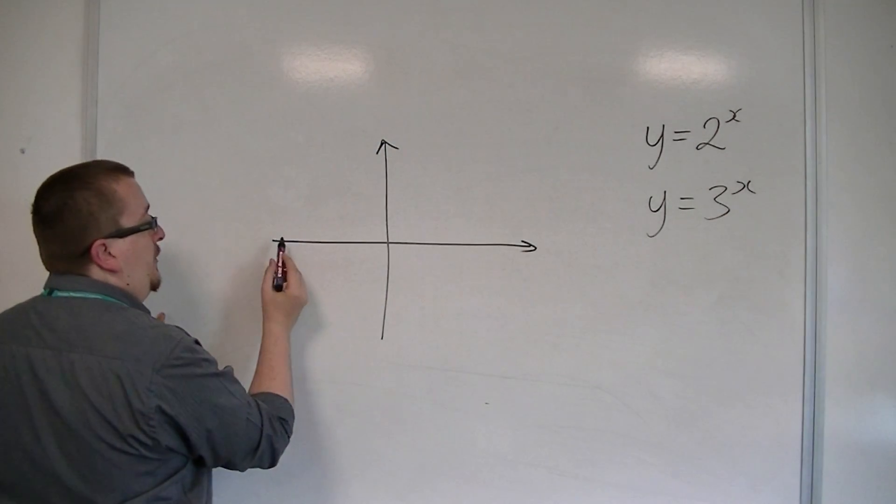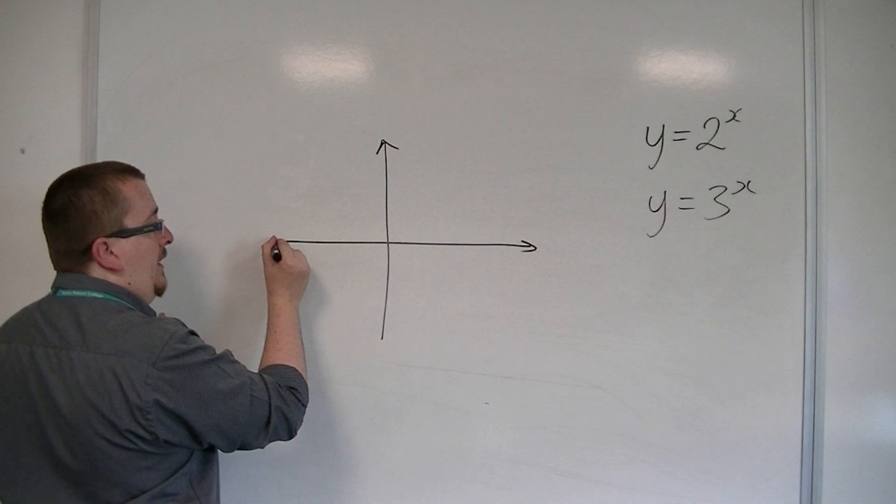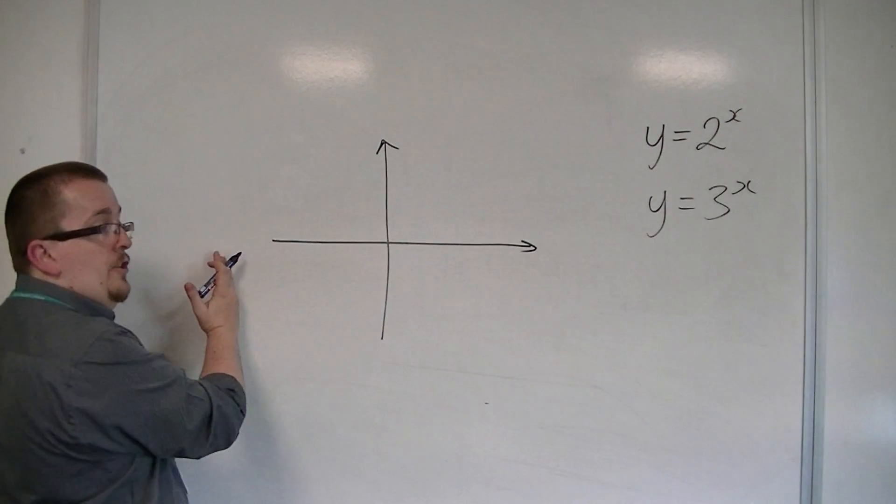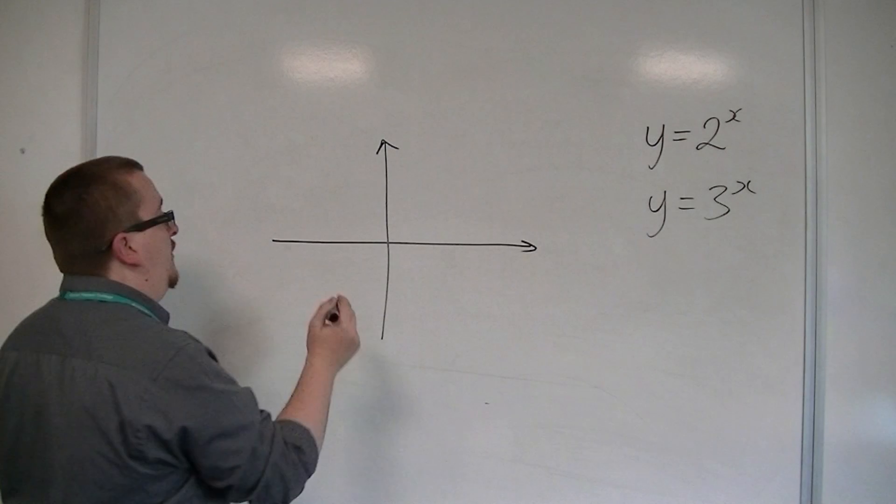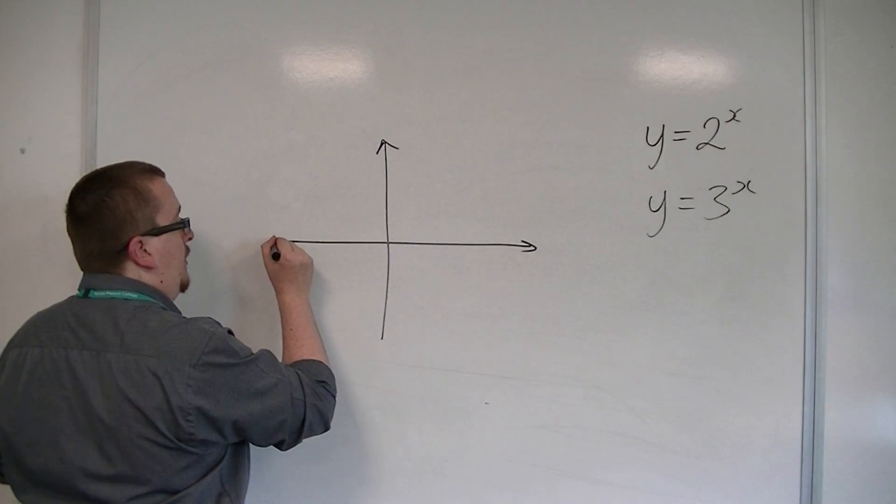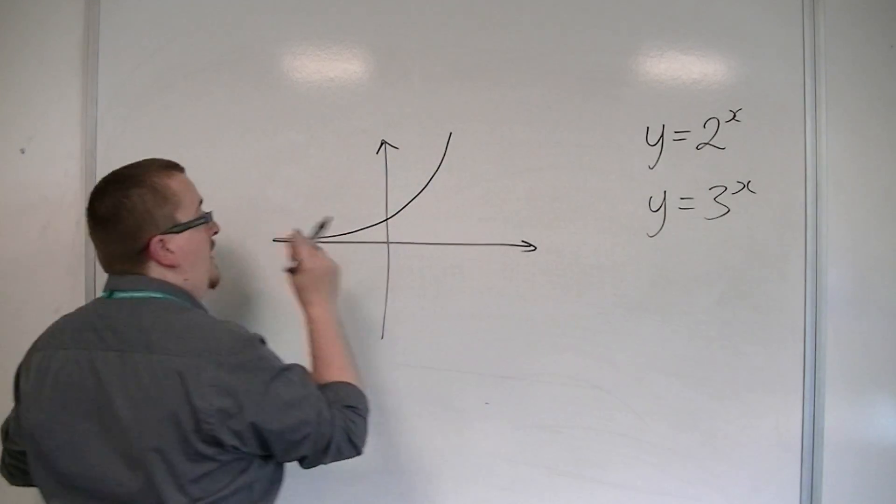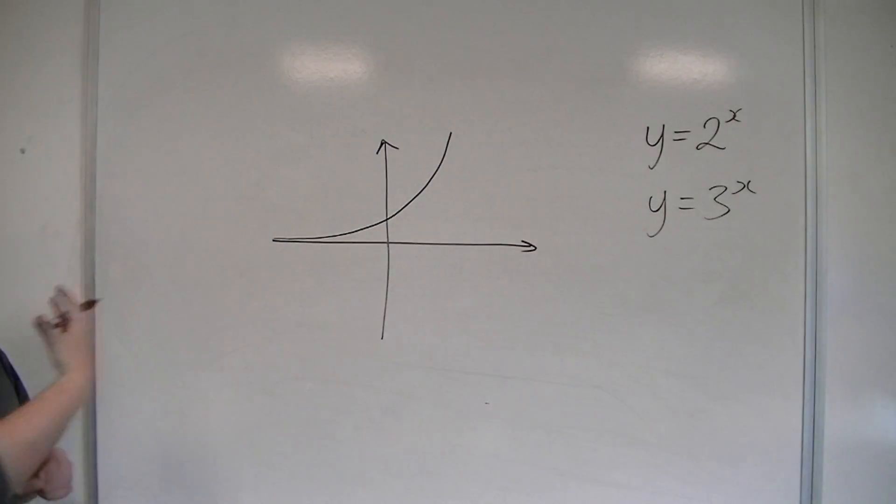y equals 2 to the x starts off very close to the x-axis on the left-hand side, because when x is large and negative, 2 to the x is going to be very small. And so as we approach the y-axis, it increases, and then past the y-axis, it increases very quickly.